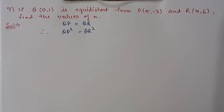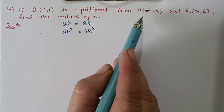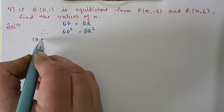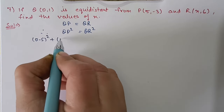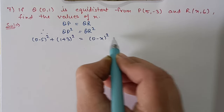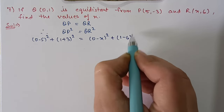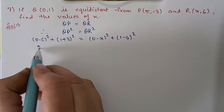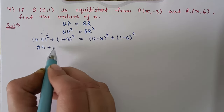Question number 7: If Q(0, 1) is equidistant from point P(5, -3) and point R(x, 6), find the value of x. Since Q is equidistant from P and R, we write QP² = QR². Applying the distance formula for Q and P: (0 - 5)² + (1 - (-3))² = (0 - x)² + (1 - 6)². (-5)² = 25 and (1 + 3)² = 4² = 16.